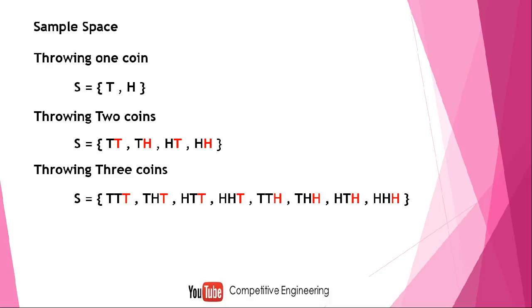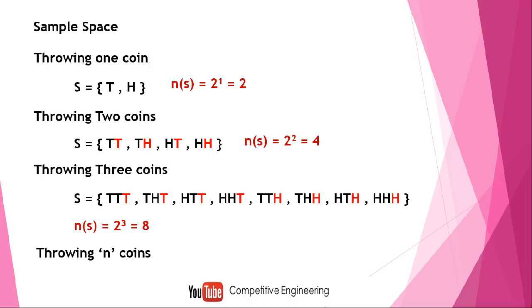We can now derive a conclusion. When drawing one coin, the sample space has 2 elements, which is 2^1. When throwing two coins, the sample space size is 4, which is 2^2. When drawing three coins, the size is 8, which is 2^3. So the pattern is 2^n, where n is the number of coins. When throwing n coins, the size of the sample space is 2^n — for example, throwing ten coins gives a sample space of size 2^10.